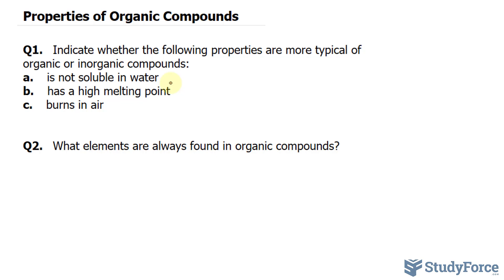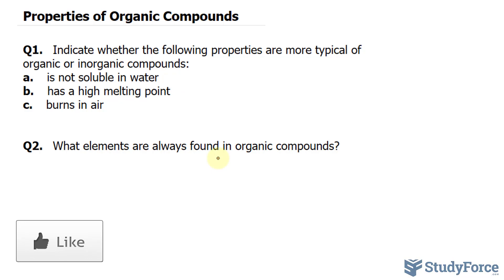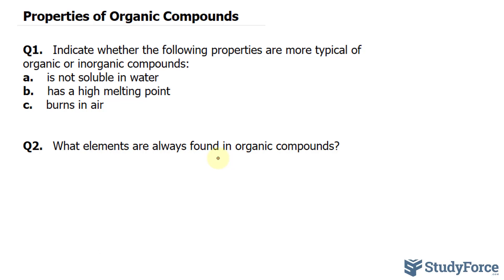Moving on to B: has a high melting point. When I think of organic compounds, I think of plastics, and when you put heat to plastic, it melts almost instantaneously. Cooking oil also has a low smoke point where it starts to smoke even before it reaches 40 or 50 degrees Celsius. On the contrary, a rock, which is inorganic and doesn't have any hydrocarbons, takes an extreme amount of heat in order to actually melt into molten rock.